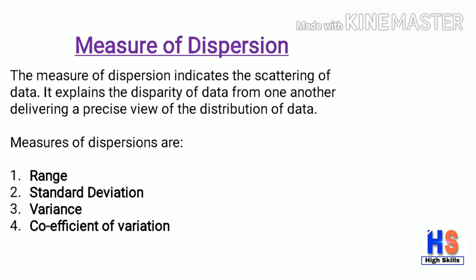The measure of dispersion indicates the scattering of data. It explains the disparity of data from one another, delivering a precise view of the distribution. Some measures of dispersion are range, standard deviation, variance, and coefficient of variance. Standard deviation is the one most commonly used as a measure of dispersion in SPC.